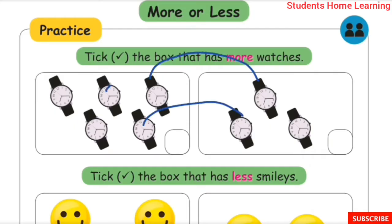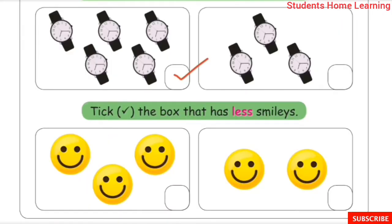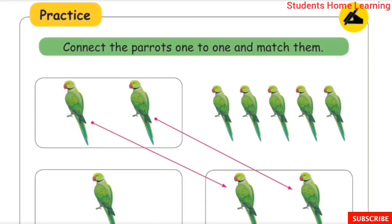Match 4 watches: 1, 2, 3. In this box there are no extra watches; in this box there are 2 watches. The box with more watches has more. Tick the box that has fewer smileys — the box with fewer smileys gets a tick. The 2nd box has fewer smileys, so tick the 2nd box.